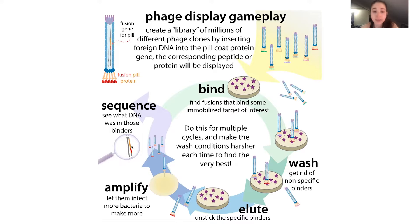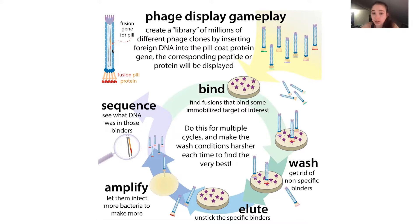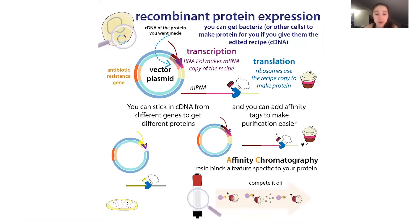We have millions of different phages with millions of different proteins corresponding to millions of different DNA sequences, and we need to find out what the DNA sequence was that caused the specifically-bound protein to be made. You can sequence this — you don't have to sequence the whole thing because you know the region where you inserted the foreign DNA. You can amplify or sequence that region to find what the DNA was inside. Then you take that DNA and clone it into some other expression vector such as a plasmid — a circular piece of DNA you can put into bacterial cells to get them to make more of the protein, which you can purify and test for various functions.